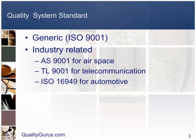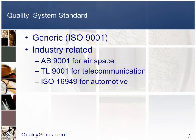The ISO 9000 series of quality management systems standards are generic and applicable to all sectors. On the other hand, some industry sectors consider that some aspects of the standards are not sufficiently detailed for their industry. Sector-specific standards, based on the ISO 9000 series, have therefore been further developed to take into consideration characteristics particular to individual sectors. Examples of sector-specific quality management systems are AS 9001 for aerospace industry, TL 9001 for telecommunication industry, and ISO 16949 for automotive sector.